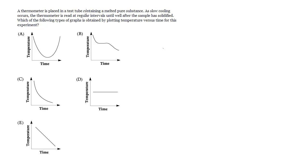A thermometer is placed in a test tube containing a melted pure substance. As slow cooling occurs, the thermometer is read at regular intervals until well after the sample has solidified. Which of the following types of graphs is obtained by plotting temperature versus time for this experiment?